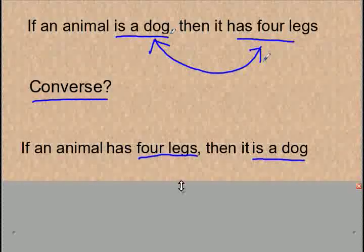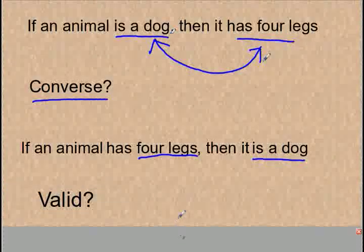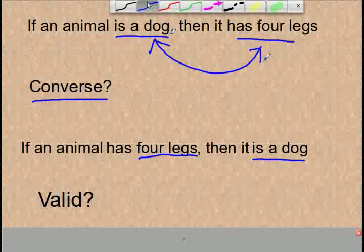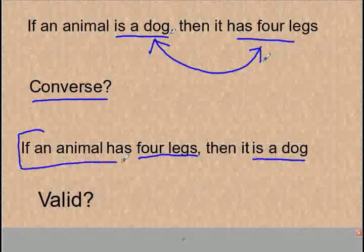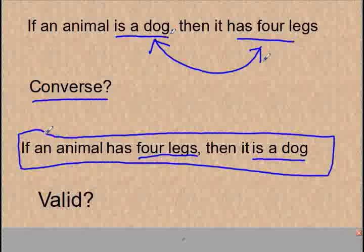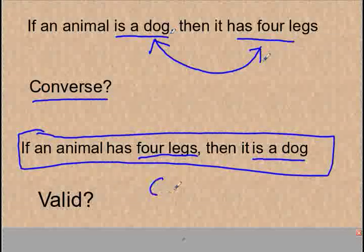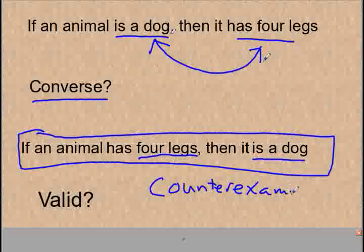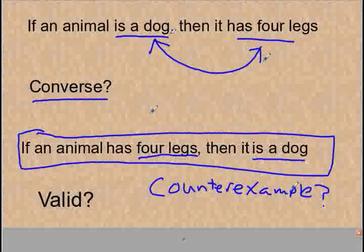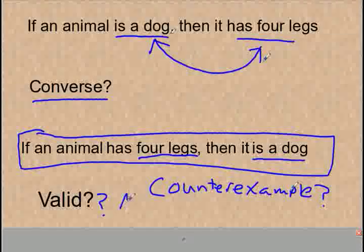The second part is deciding whether or not this is valid. If we pay attention to the converse — if an animal has four legs, then it's a dog — is there a counter-example that would prove this statement wrong? Yes, because I can think of lots of animals that have four legs. A raccoon has four legs, and a raccoon is certainly not a dog. So is this valid? No, I don't believe that it would be.